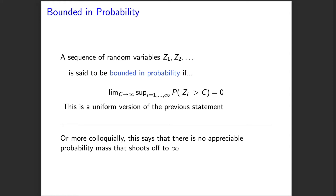Now we're going to look at our definition for a sequence to be bounded in probability. A sequence of random variables z1, z2, up to zn, etc., is said to be bounded in probability if this limiting statement holds. It looks very similar to the result we had before — that the probability a single random variable exceeds c in absolute value goes to zero as c gets large. For a sequence to be bounded in probability, we need that to happen in a uniform way: as we look at any given c, we consider the supremum of the probabilities that any random variable in our sequence exceeds c, and we need that to go to zero as c goes to infinity.